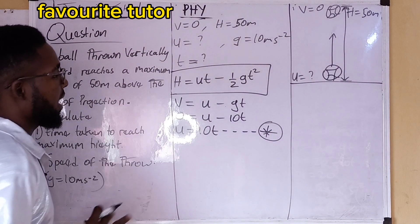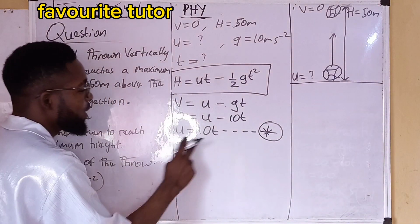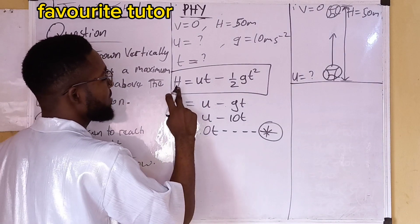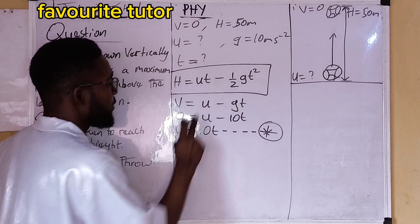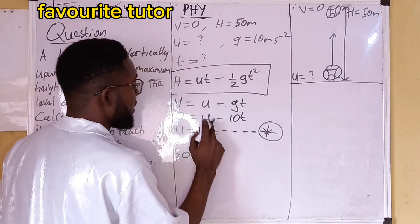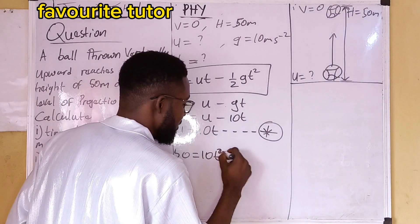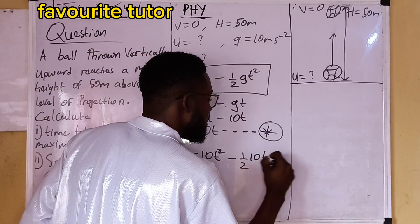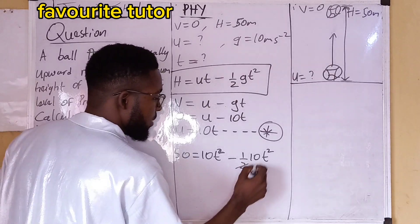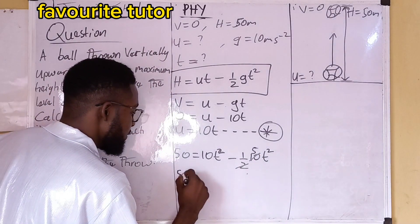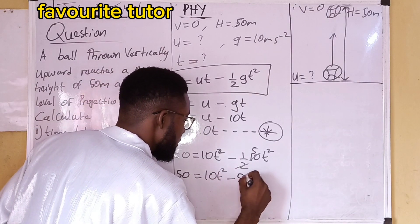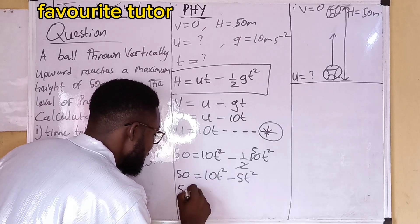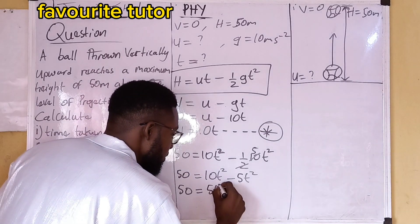Let's call this equation 'star.' Now substituting back into the required equation: at maximum height, 50 = ut − (1/2)gt². Substituting u = 10t gives: 50 = (10t)(t) − (1/2)(10)(t²), which simplifies to: 50 = 10t² − 5t². Since these are like terms, we subtract: 50 = 5t².